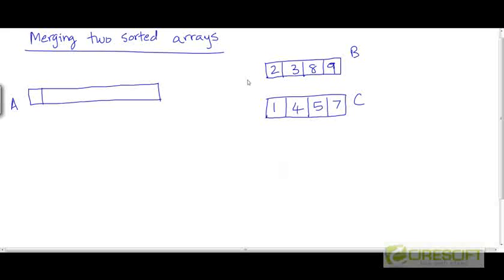The way to do that is to first notice that the smallest element in both these arrays is going to be present at the head of the list. The smallest element of B is 2 and the smallest element of C is 1. So the smallest element overall is going to be one of these two elements at the head of the two lists — we don't need to check the interior. If we compare 1 and 2, we know 1 is smaller, so we extract it and append it to our output array A.